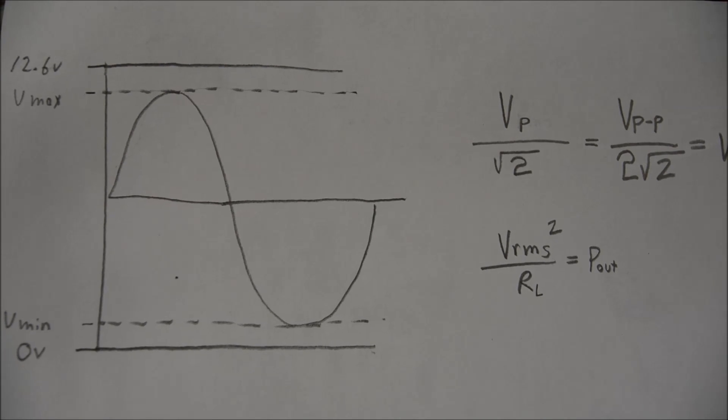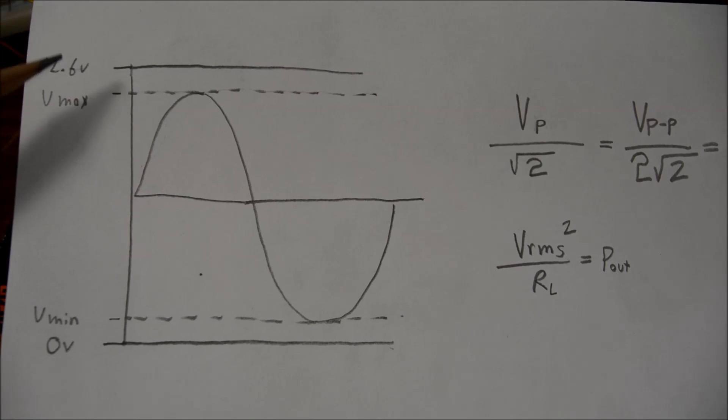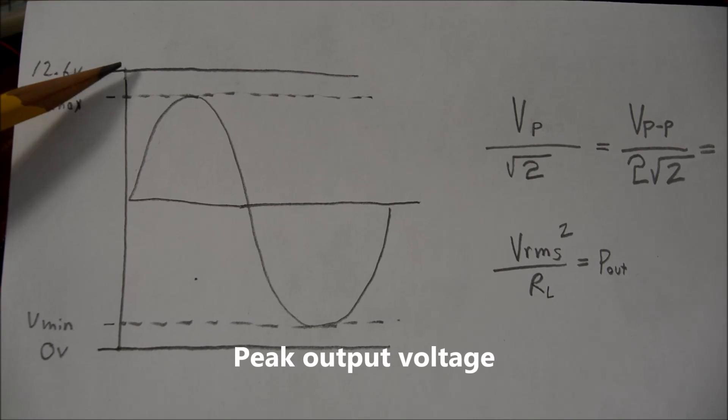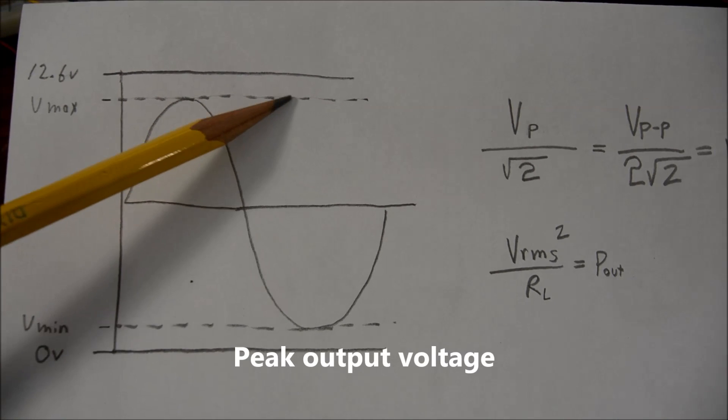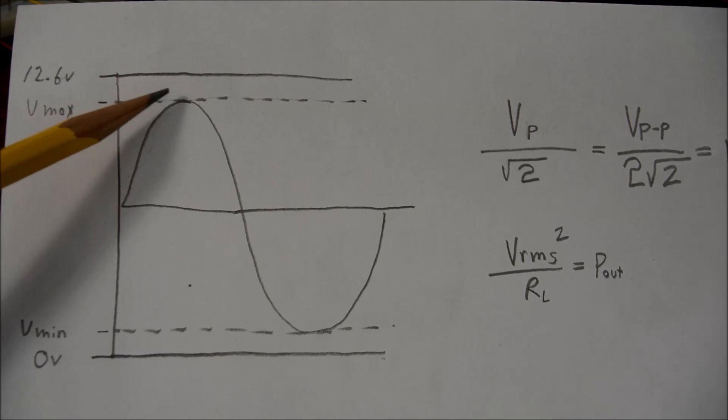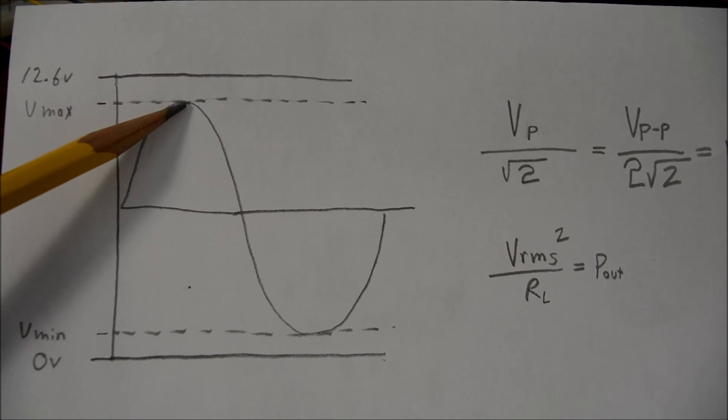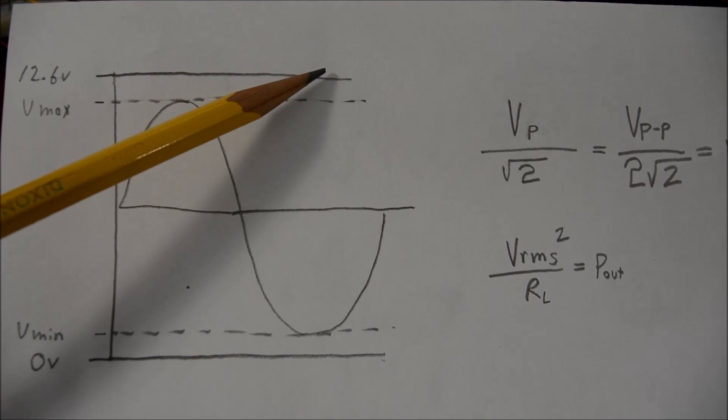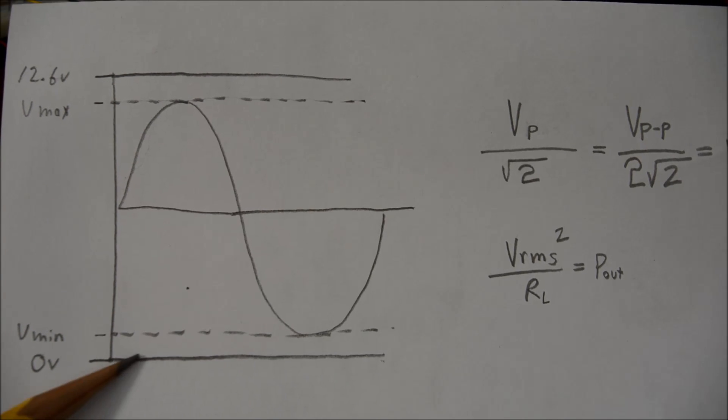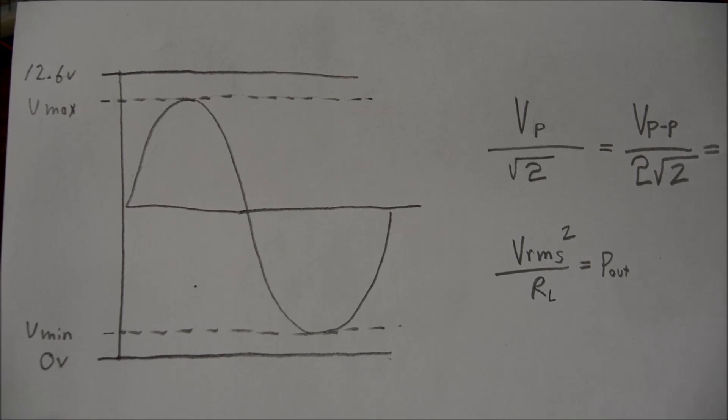So the output power is somewhat less than your rails, and that's the dotted line. That can vary depending on the load. The rails are the solid line. These are single supply amplifiers, by the way.